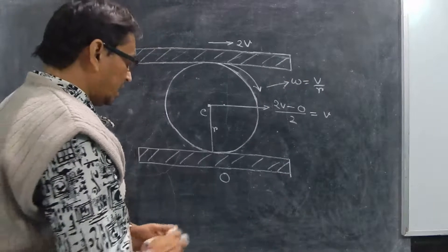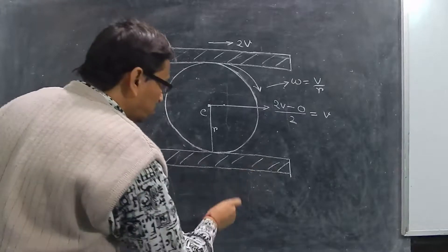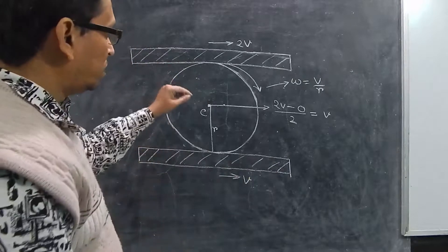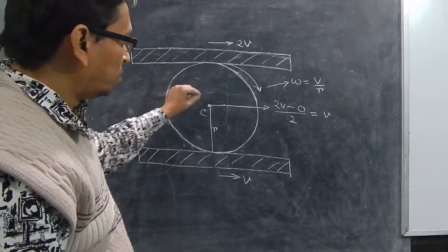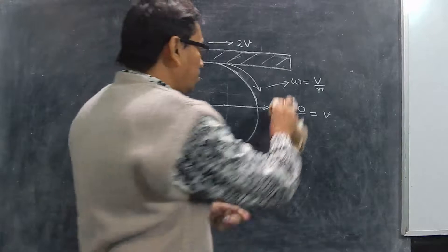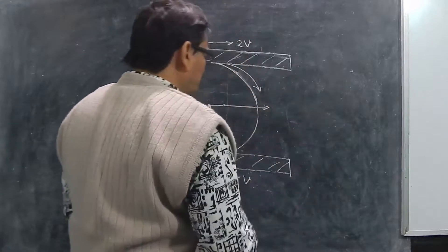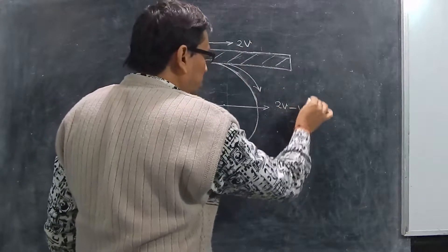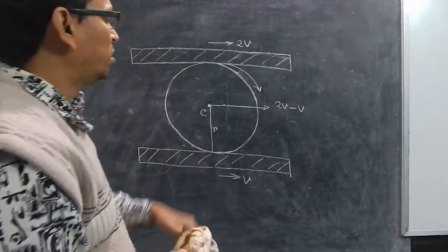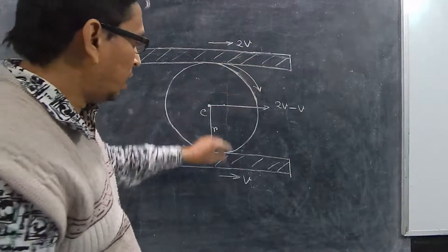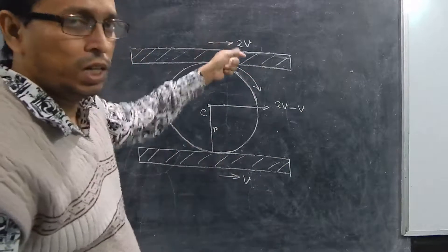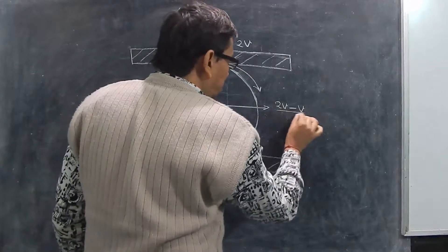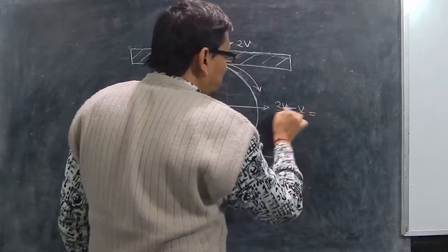Now let us take another example. Suppose now the other plank also starts moving with a velocity V. We have to calculate the velocity of the center of mass. We take the higher velocity first — 2V minus V — so we are taking the higher velocity first because we don't have to take the modulus. Otherwise you can do V minus 2V and then take the modulus; the result will be the same. So 2V minus V divided by 2 gives you V by 2.